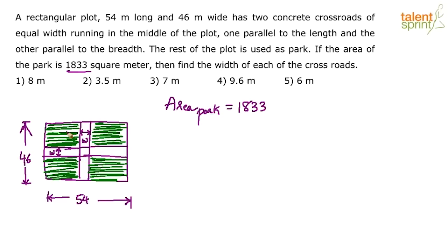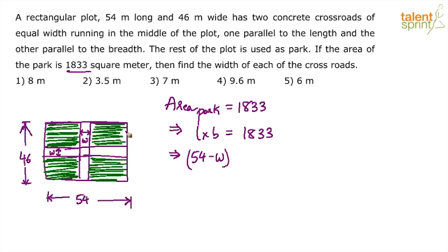If you join the four green shaded parts together, you get a rectangle. The length of that rectangle is 54 minus w, because from the total length 54 you subtract w. Similarly, the breadth is 46 minus w. So the area equation is: (54 − w)(46 − w) = 1833. One equation, one variable — solve it.